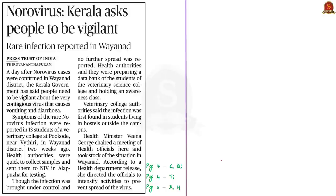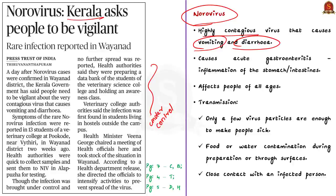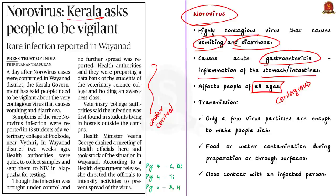Now let us take up this news article. The news article talks about a rare infection reported in Kerala — it is the norovirus infection. As of now, the infection spread has been brought under control and measures are being taken to prevent further spread of the virus. Norovirus is a very contagious virus that causes vomiting and diarrhea. It causes acute gastroenteritis, that is inflammation of the stomach and intestines. It affects people of all ages and is highly contagious. Infected people can shed billions of norovirus particles and only a few virus particles are enough to make other people sick.